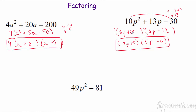Last one — remember the difference of squares trick. They're both perfect squares, so one factor is minus and one is plus. Take the square root of 49p² — that's 7p — and the square root of 81 — that's 9. So the answer is (7p − 9)(7p + 9). Remember we also had perfect square trinomials — you may want to review those before the test.